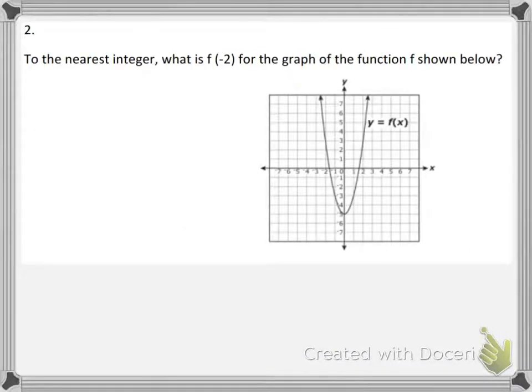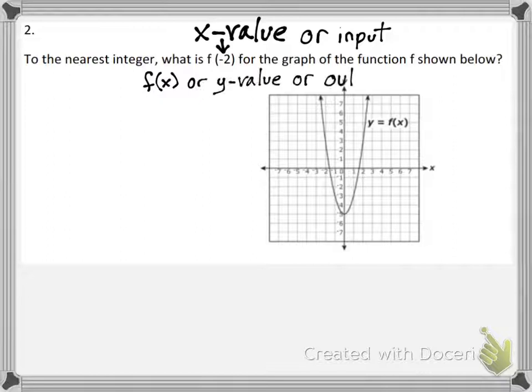Question 2: To the nearest integer, what is F of negative 2 for the graph of the function shown below? You need to remember, when you have the negative 2 inside of the parentheses, that negative 2 is your x value, your input value. When you have F of x, that is the same thing as your y value or your output value.